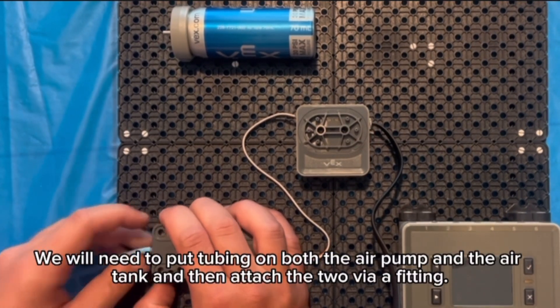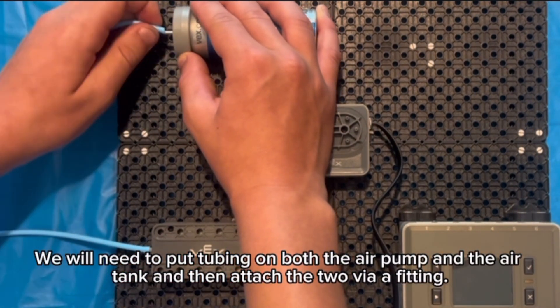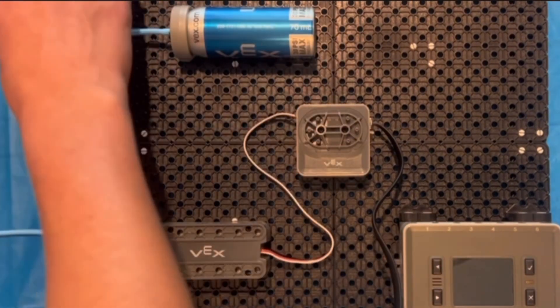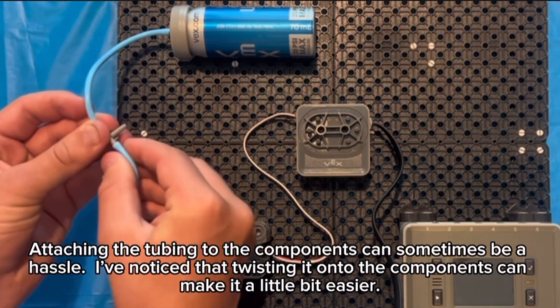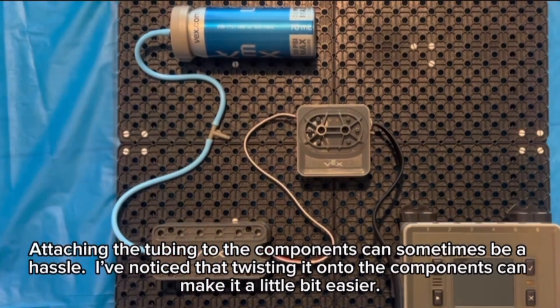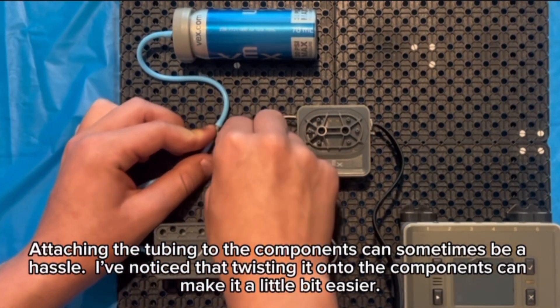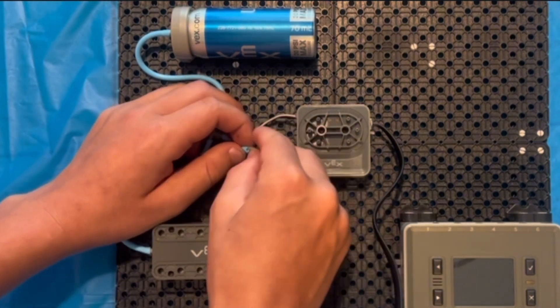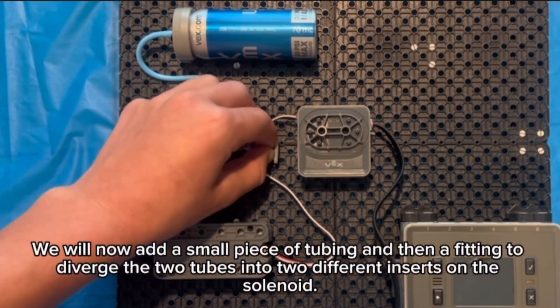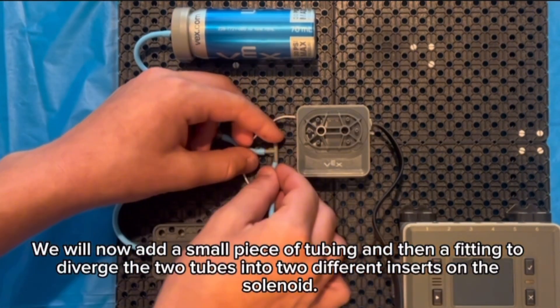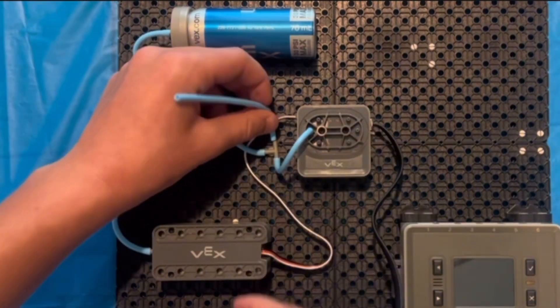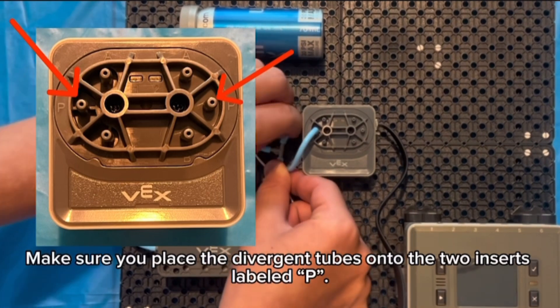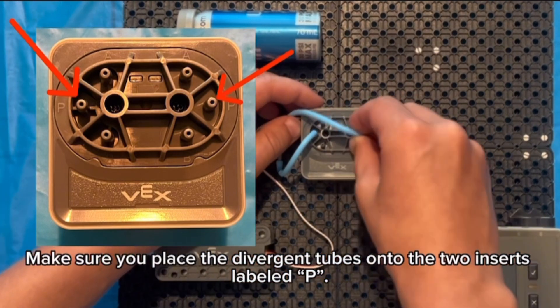We will need to put tubing on both the air pump and the air tank and then attach the tube via a fitting. Attaching the tubing to the components can sometimes be a hassle. I've noticed that twisting it onto the components can make it a little bit easier. We will now add a small piece of tubing and then a fitting to diverge the two tubes into two different inserts on the solenoid. Make sure you place the divergent tubes onto the two inserts labeled P.